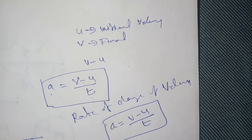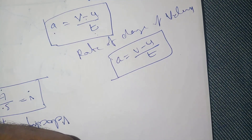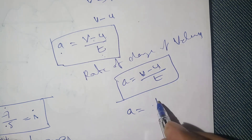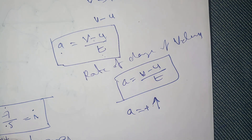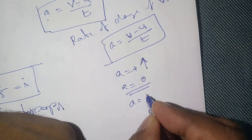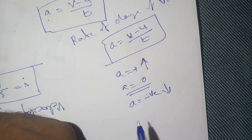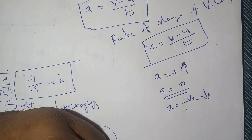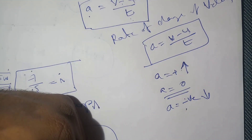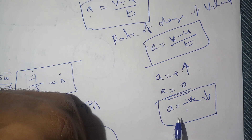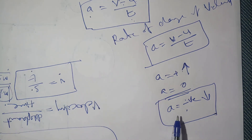Acceleration can be positive or negative. When acceleration is positive, V is greater than U, meaning the speed is increasing. When acceleration is negative, the final velocity is less than the initial velocity — meaning the speed is decreasing. This negative acceleration is also called retardation or deceleration. For example, when you apply the brakes in a vehicle, the speed reduces — that is retardation or deceleration, which is negative acceleration.